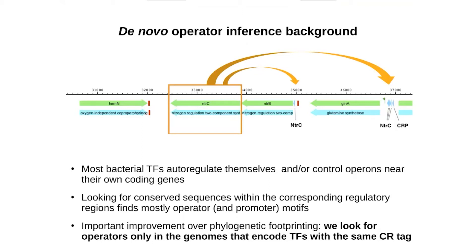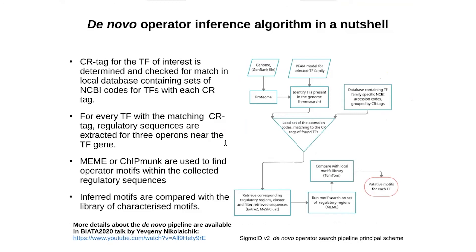Based on the above-mentioned assumptions, the NOVA operator inference algorithm collects regulatory regions for transcription factors with the same CR tags, which are further used for inference of conserved patterns using MEME or CHIPMAN. The result of the pipeline is a set of putative operator motifs compared with a library of characterized motifs. This scheme demonstrates the pipeline workflow. More details about the pipeline are available in the BeataTool 2020 talk by Evgeny Nikolaychuk.